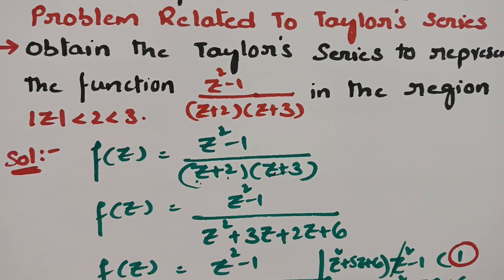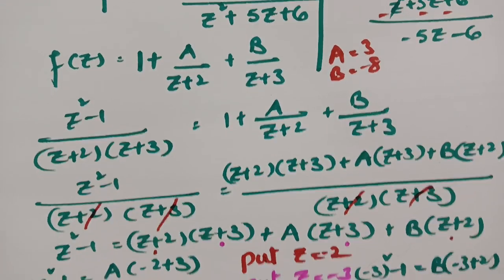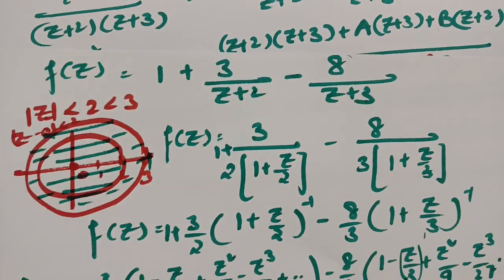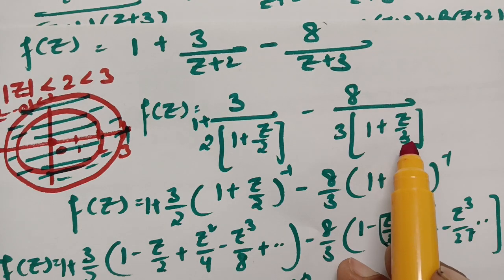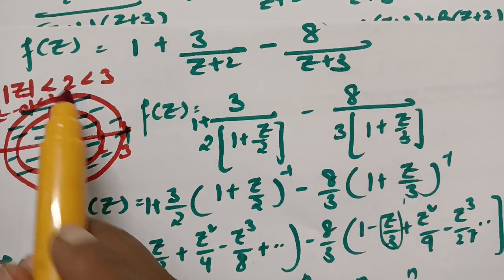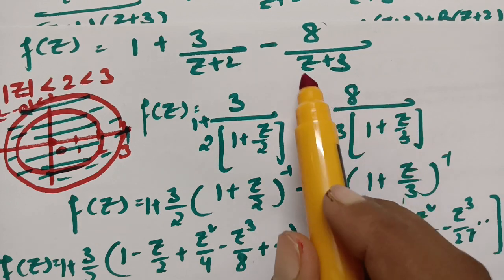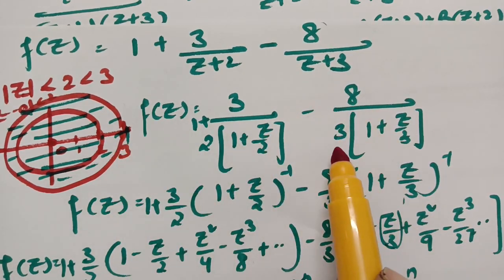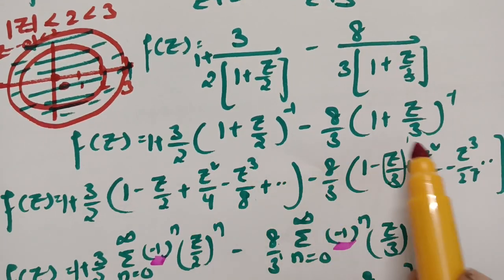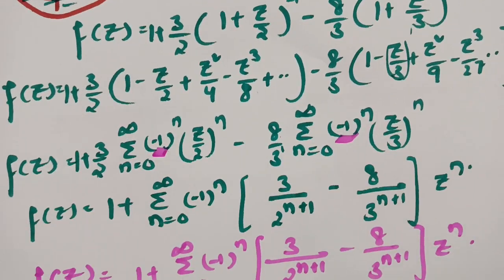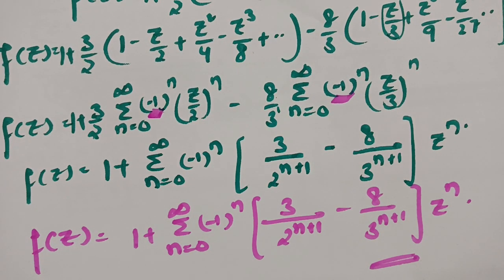After substituting A and B, for the region |z| < 2, we take 2 as the outermost point and 3 as the larger denominator, then expand using binomial distribution to get the final Taylor series answer. Hope you all understand — please practice, these are important repeatedly asked questions. Go through the playlist before your examination and pass it on to your friends. Thank you so much.